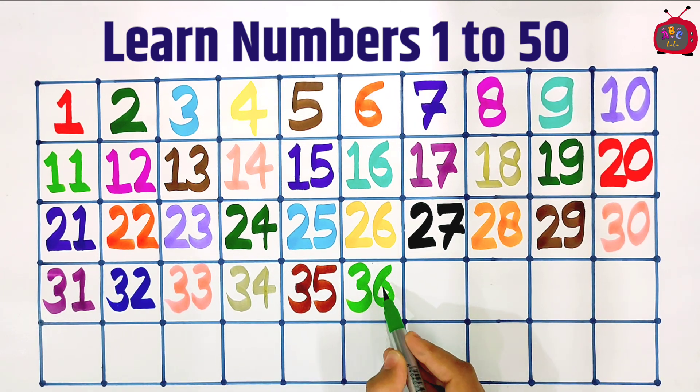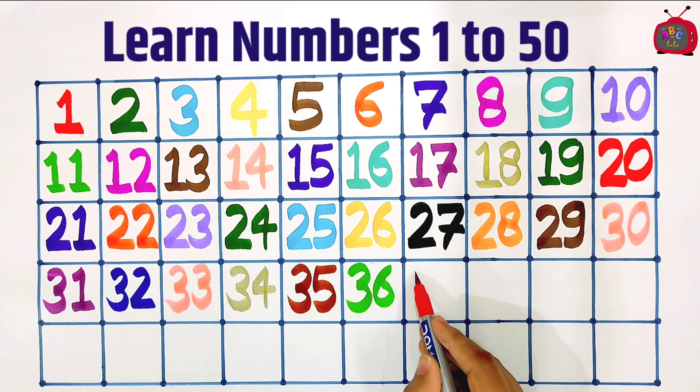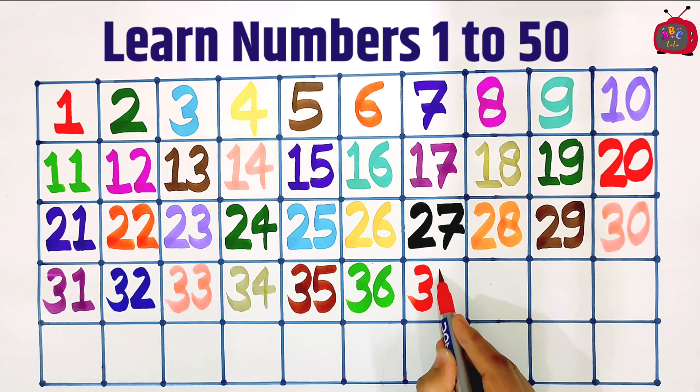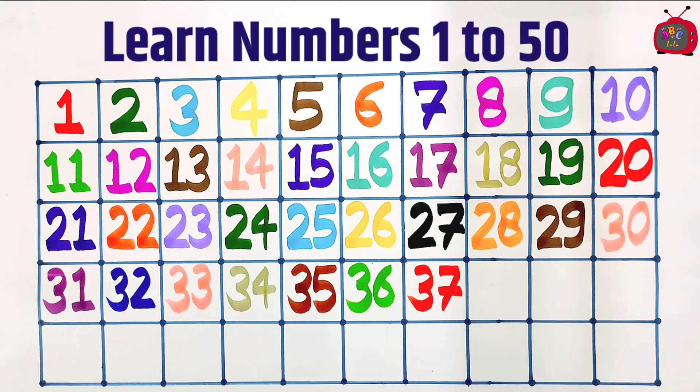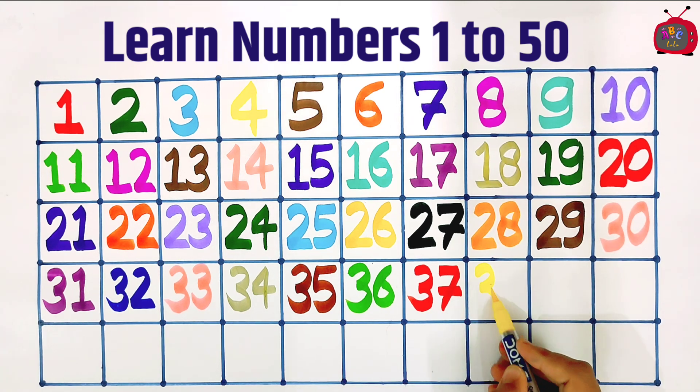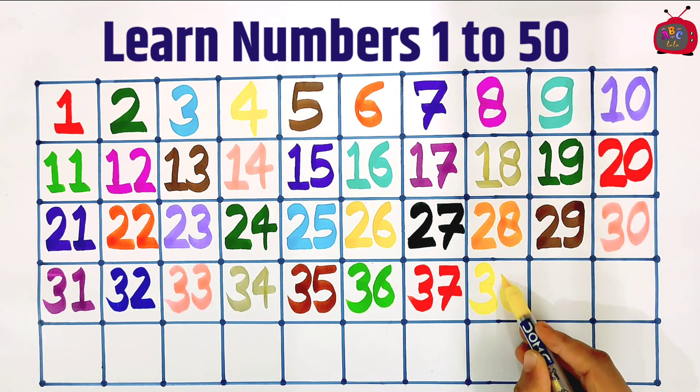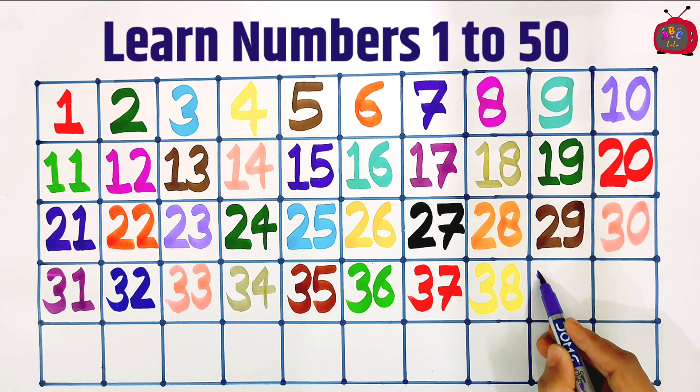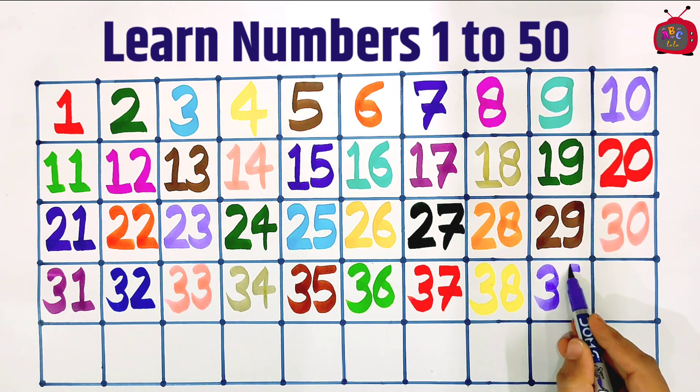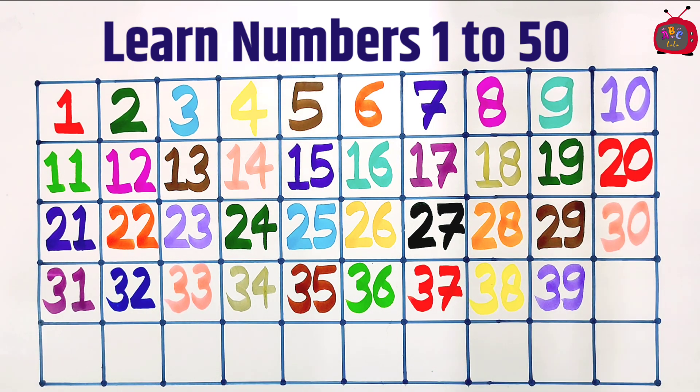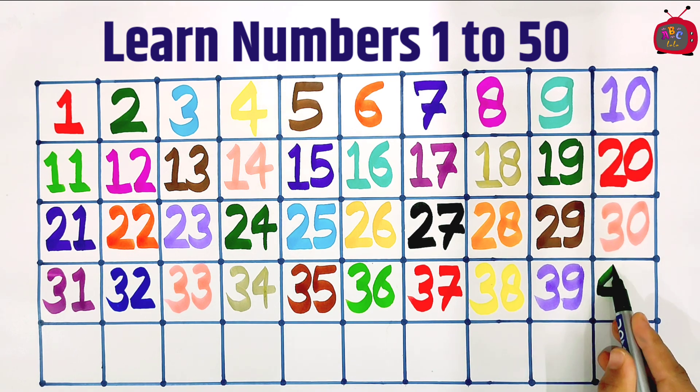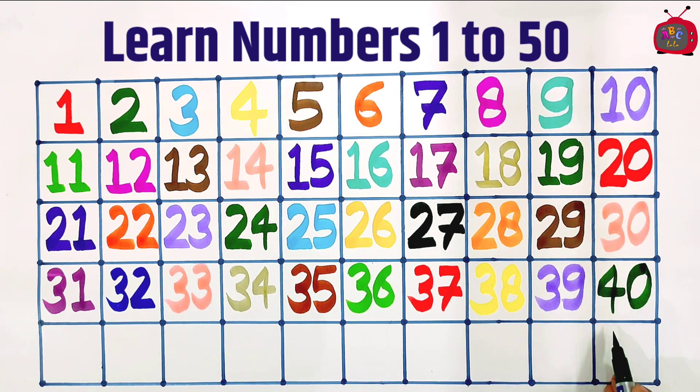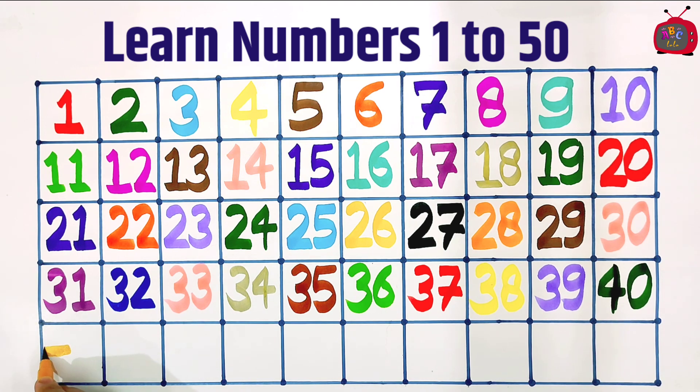Three, six: thirty-six. Three, seven: thirty-seven. Three, eight: thirty-eight. Three, nine: thirty-nine. Four, zero: forty.